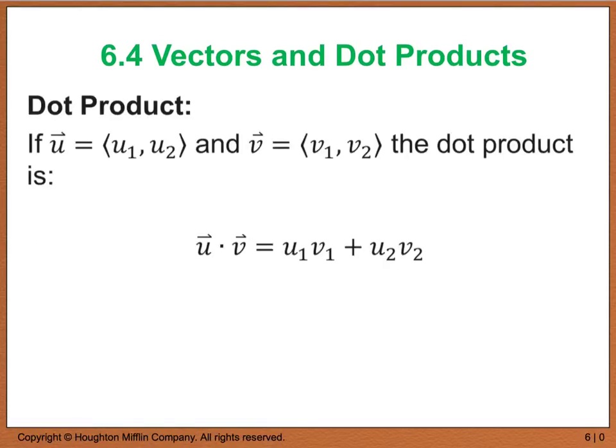The definition of a dot product says if vector u equals u1, u2 and vector v equals v1, v2, then their dot product which is shown like this and kind of looks like a multiplication, but know that it actually means a dot product is u1 times v1 plus u2 times v2. And again this will produce a single number or a scalar.